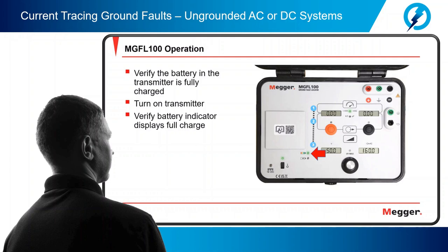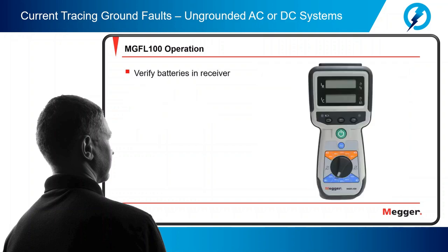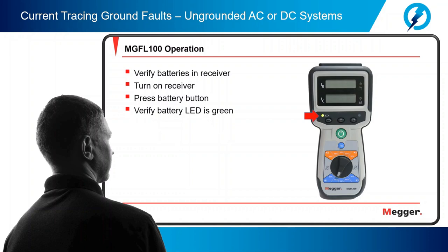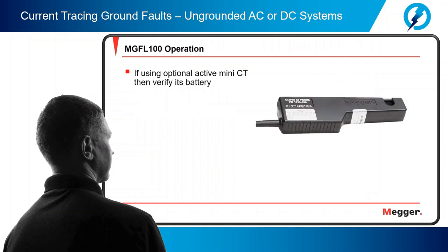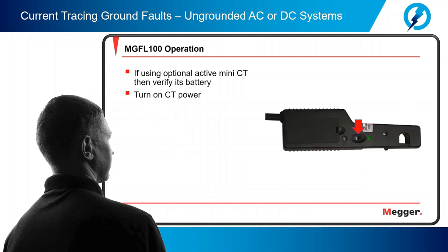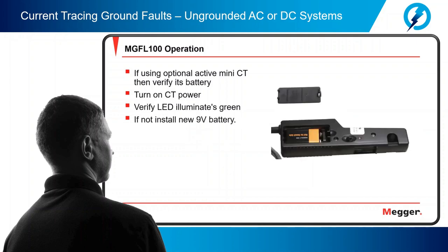Next, verify the batteries in the receiver are good. Turn on the receiver, let it boot up, then press the battery button and verify the battery LED is green. If not, replace the AA batteries in the receiver. If you will be using the optional active mini-CT, be sure the battery in the CT is good — turn on the CT power and verify the LED illuminates green. If not, install a new 9-volt battery.